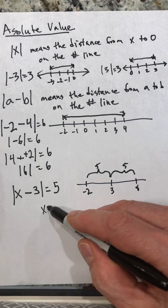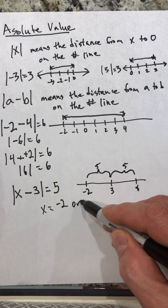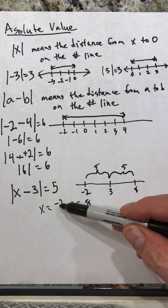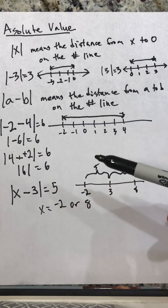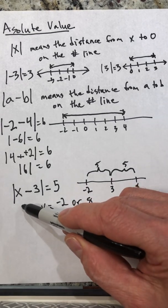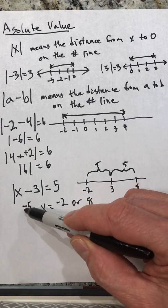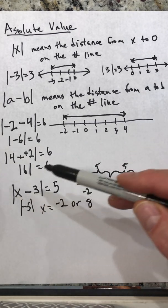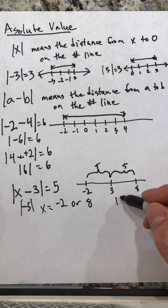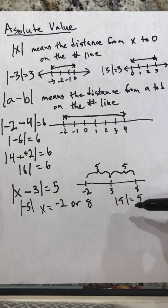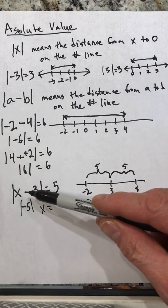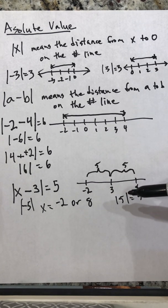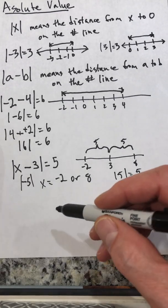Solving for this, x is either negative two or eight. We can verify: plugging in negative two gives the absolute value of negative two minus three, which is the absolute value of negative five, which equals five. Plugging in eight gives eight minus three equals five, and the absolute value of positive five is also five. Solving an equality like this — just think of number lines.